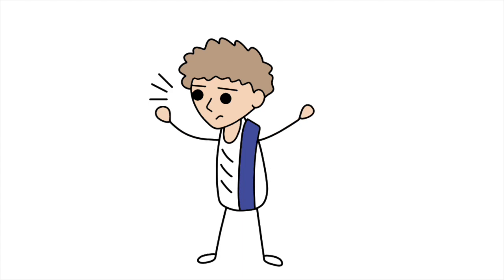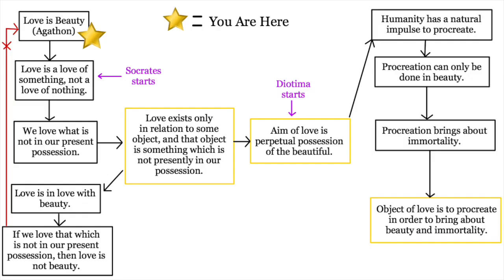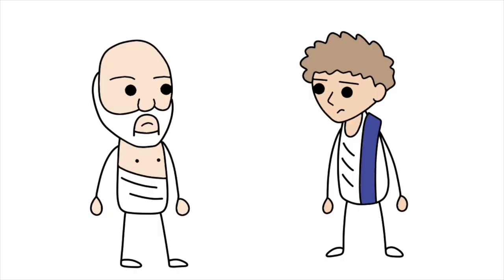So, after hearing a bunch of other speeches on love, the host of the party, Agathon, gives his speech. What's important is the conclusion that Agathon reaches that love is beauty. Sounds reasonable at first. I mean, seeing two people in love, especially in old age for some reason, that's a beautiful thing. But uh-oh. Here comes Socrates, as usual, about to ruin everything.